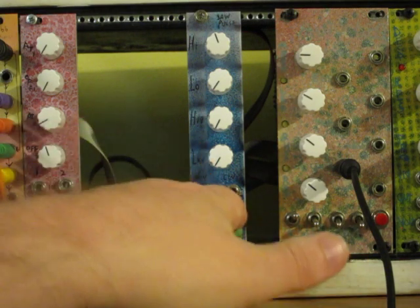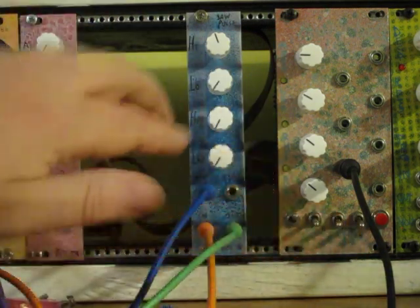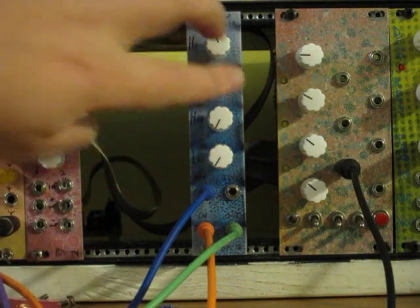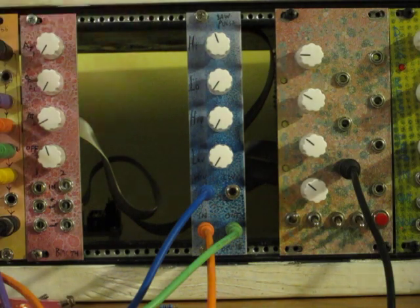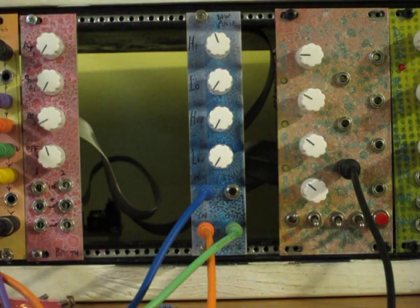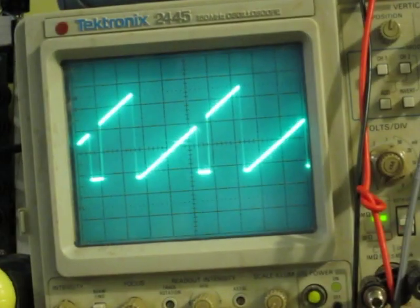It's got input and output for the audio, and then two CV inputs that get attenuated here. And these two controls control how much of it is getting turned off in the positive and negative half of the waveform. Let me move the camera over to the oscilloscope so it's easier to see what it actually does.